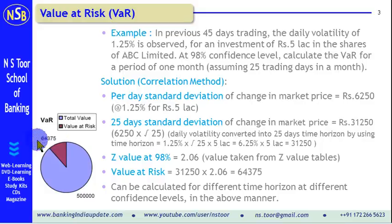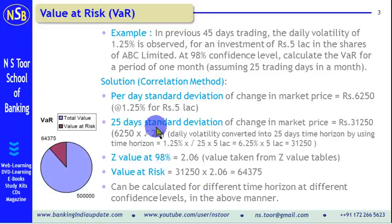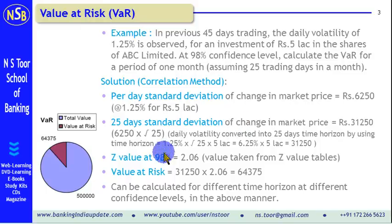This Value at Risk can be calculated for different time horizons at different confidence levels. When the confidence level changes, we find the appropriate Z value. When the time horizon changes, we recalculate the standard deviation for that particular time horizon. This is how we calculate Value at Risk. Thank you very much for watching this video. I am sure you will be benefited by the contents of the video. Thank you once again.